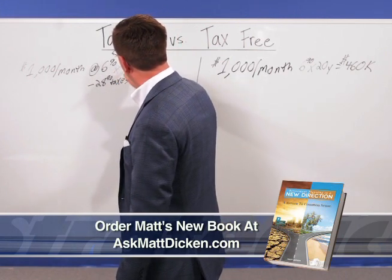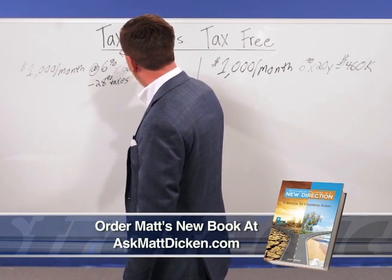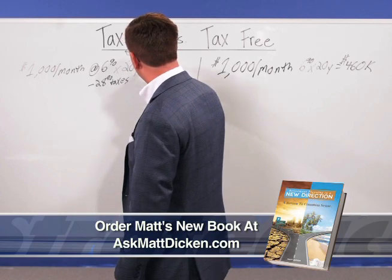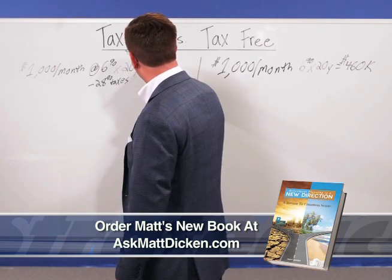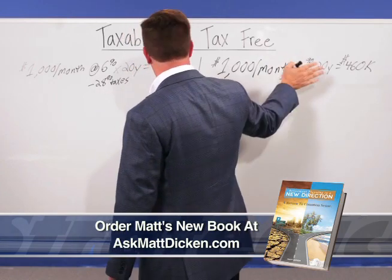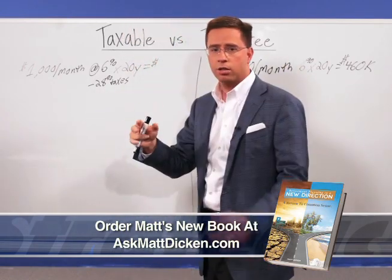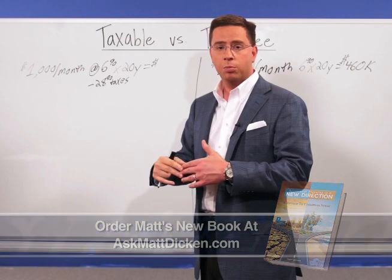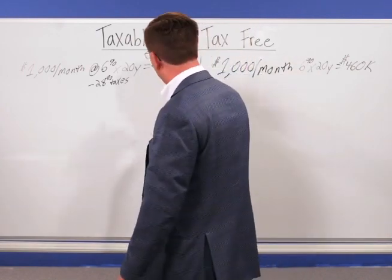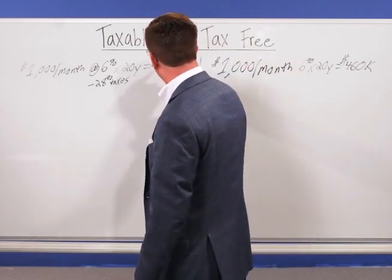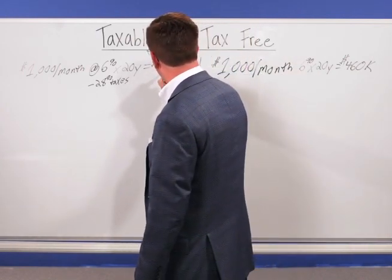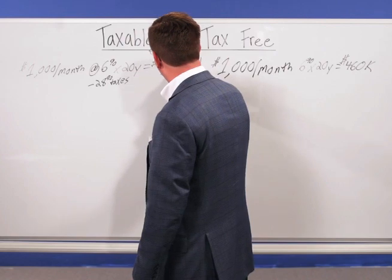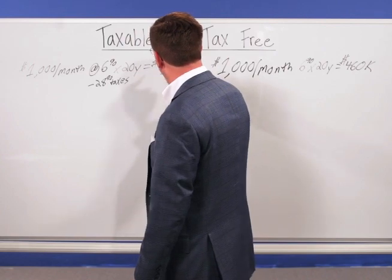We're going to do this over the same 20-year period. At the end of the 20 years, the account is not going to be worth $460,000 — obviously it's going to be worth less because you're paying taxes along the way. The account at the end of the 20 years is only going to be worth $380,000.